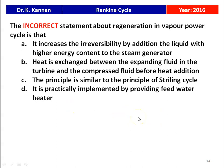Next question from the 2016 question paper: the incorrect statement about regeneration in a vapor power cycle is — it increases irreversibility by addition of liquid with higher energy content to the steam generator; heat is exchanged between expanding fluid in the turbine and compressed fluid before heat addition; the principle is similar to the Stirling cycle; or it is practically implemented by providing a feed water heater? Statements B, C, and D are correct. The incorrect statement is A: the increase in irreversibility by addition of liquid with higher energy content to the steam generator.